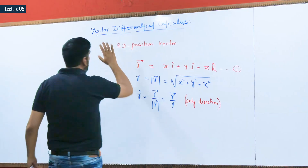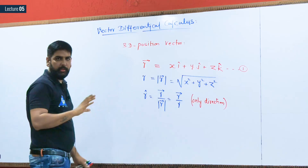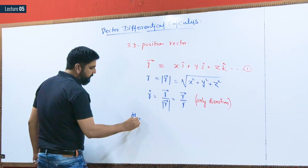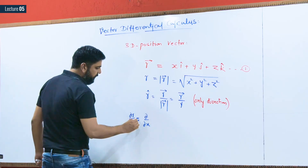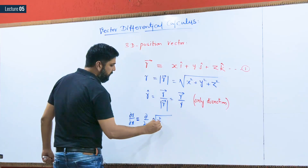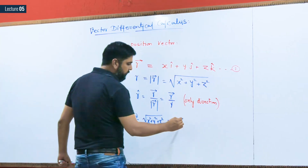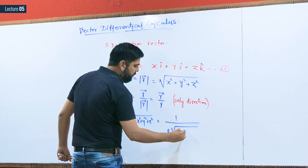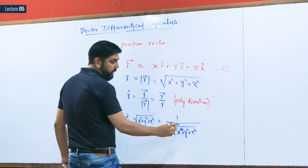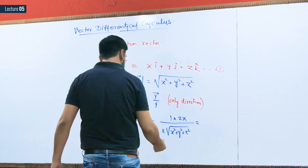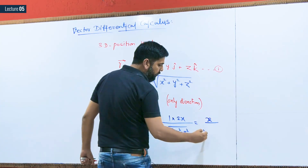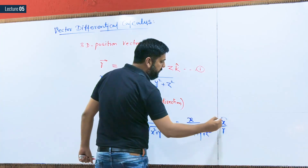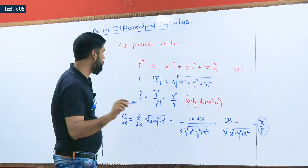Now let us derive some results related to R in vector differential calculus. To calculate ∂R/∂x, we differentiate scalar R — which is the square root of x-squared plus y-squared plus z-squared — with respect to x. This gives 1 over 2√(x²+y²+z²) times 2x. The 2s cancel, leaving x divided by √(x²+y²+z²), which is simply x divided by R.